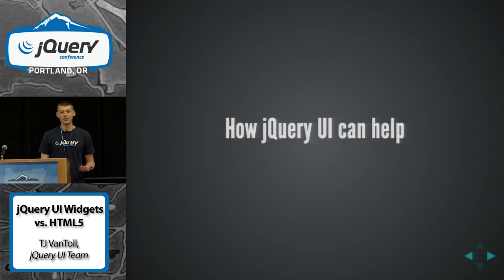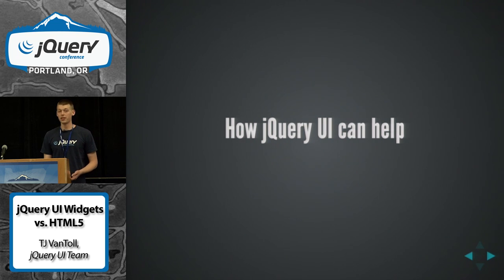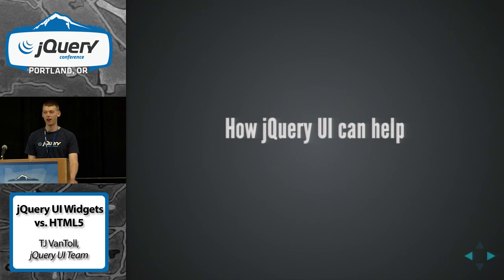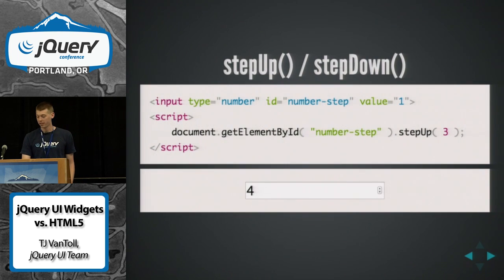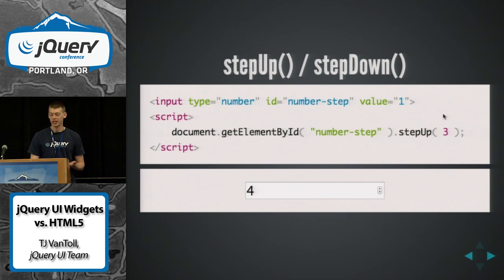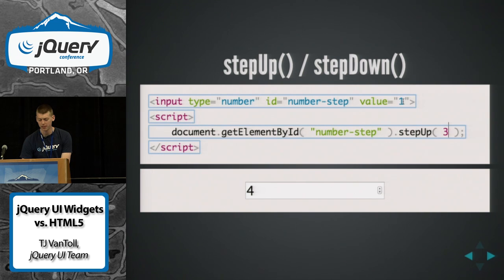Unfortunately, we don't have a solution to this problem at the moment. You're basically stuck picking one or the other. One thing that jQuery UI specifically can do is try to help make the native controls as best as they can be. jQuery UI has an interesting position in that a lot of these controls that are ending up in the browser have been in the wild in UI for years, and we kind of have an idea of what works and what doesn't. For example, input number pickers have step-up and step-down methods. The very first time this was written up, the default value if you didn't pass a parameter was zero, so calling step-up and step-down would actually do nothing. That's something where we can provide feedback.